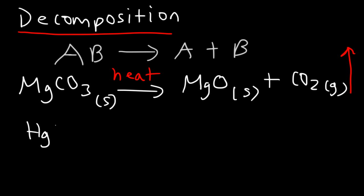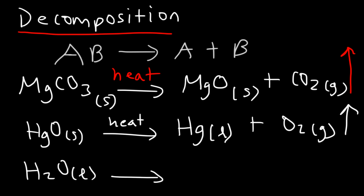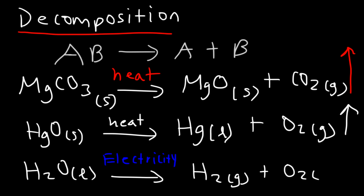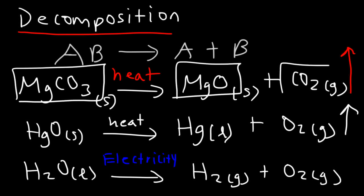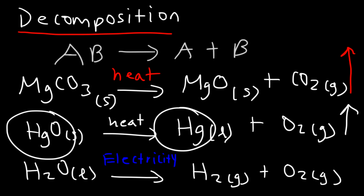Here's another example: if you have mercury oxide and add heat, any volatile component will leave. This creates liquid mercury and generates oxygen gas. Another example of decomposition is water — if you run an electric current through water, it decomposes into hydrogen gas and oxygen gas. In a decomposition reaction, you can take a complex compound and break it into two smaller compounds, or decompose it into two simpler elements.